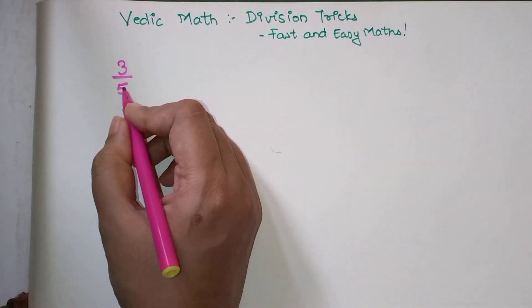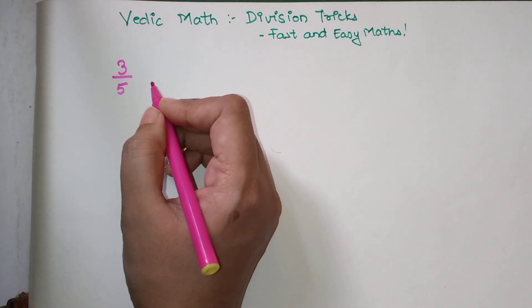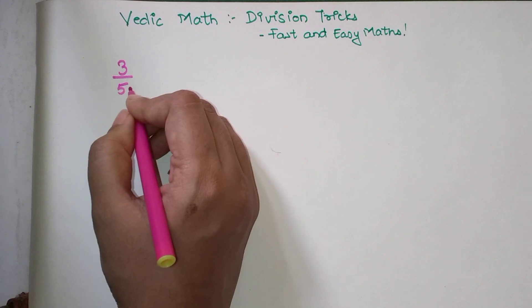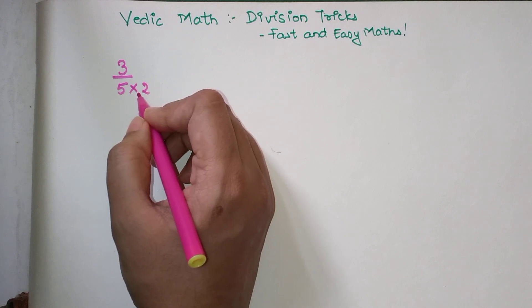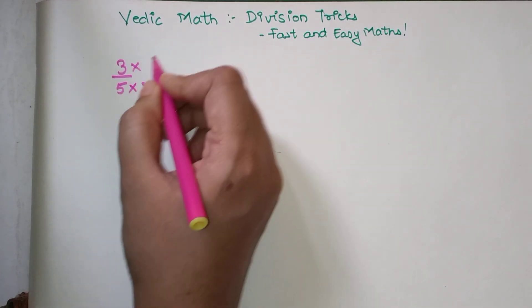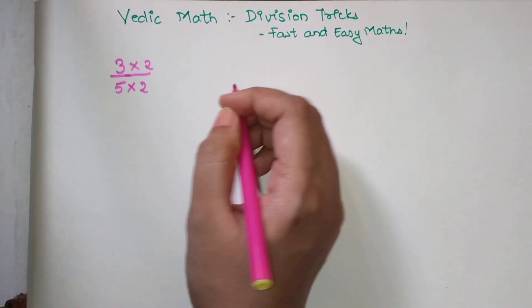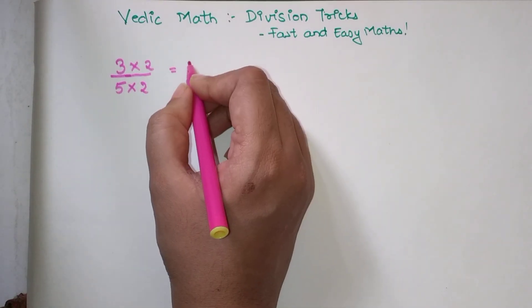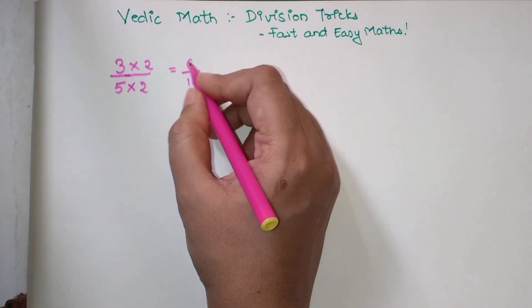In Vedic Math, convert this in terms of 10. If I want to convert 5 to 10, I multiply by 2. If I'm multiplying the denominator by 2, the numerator also has to be multiplied by 2 for the equality of the fraction to sustain.